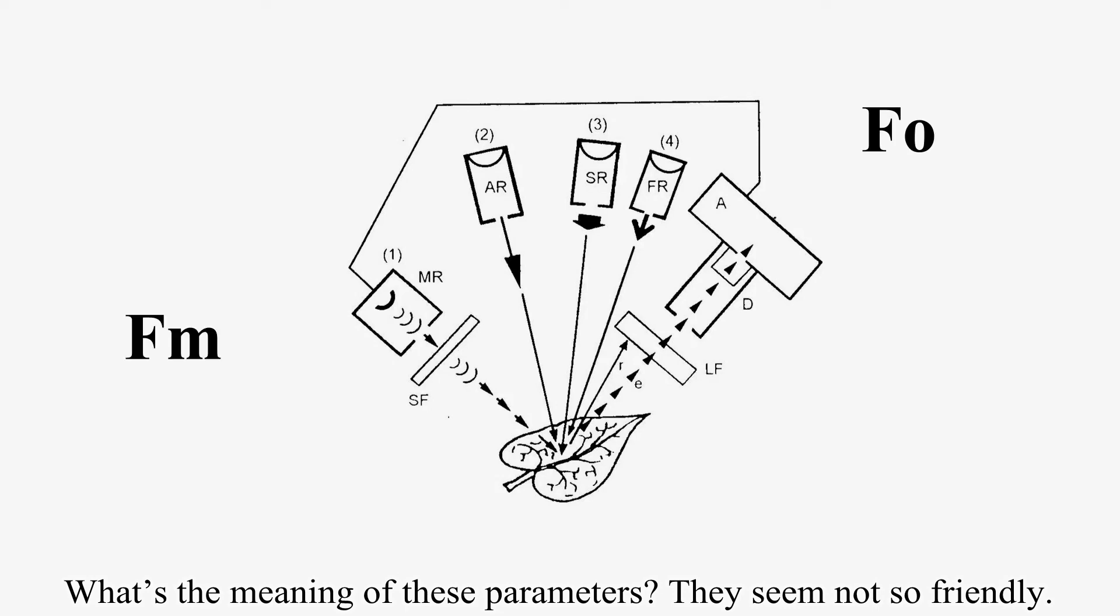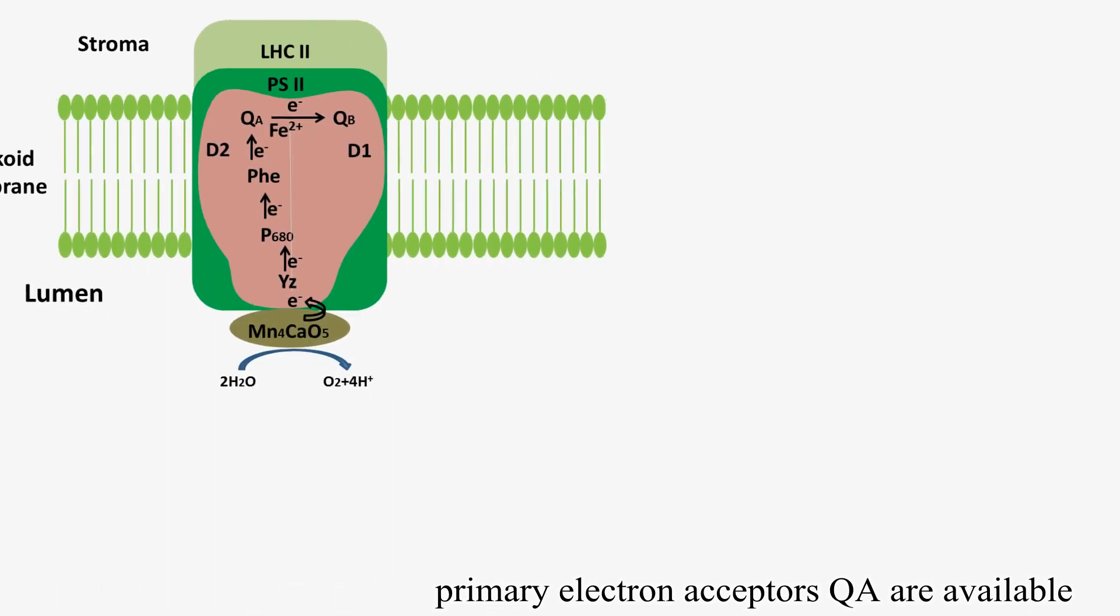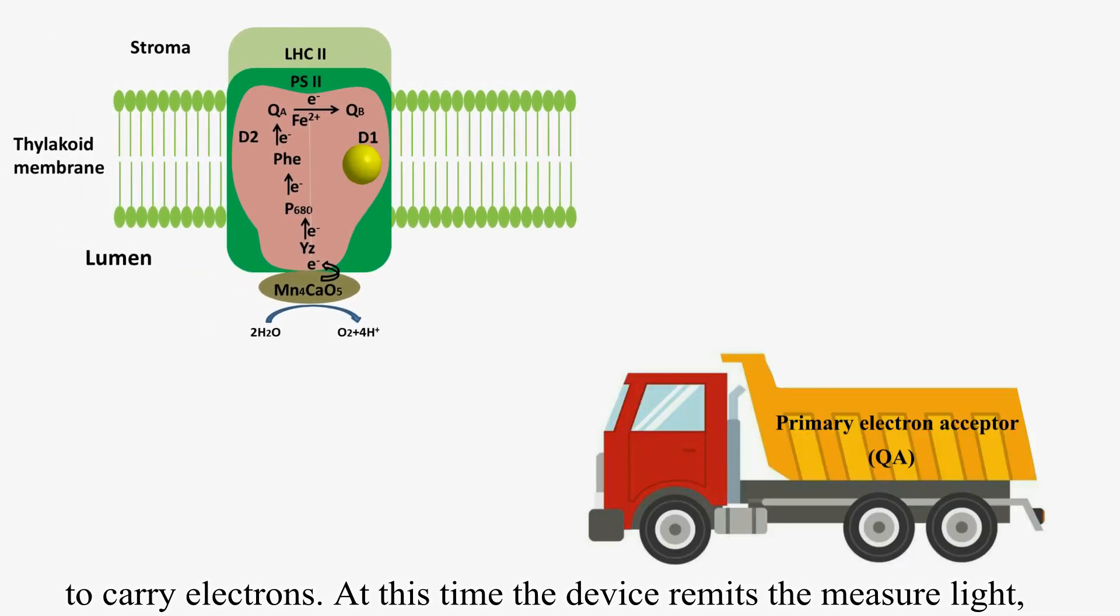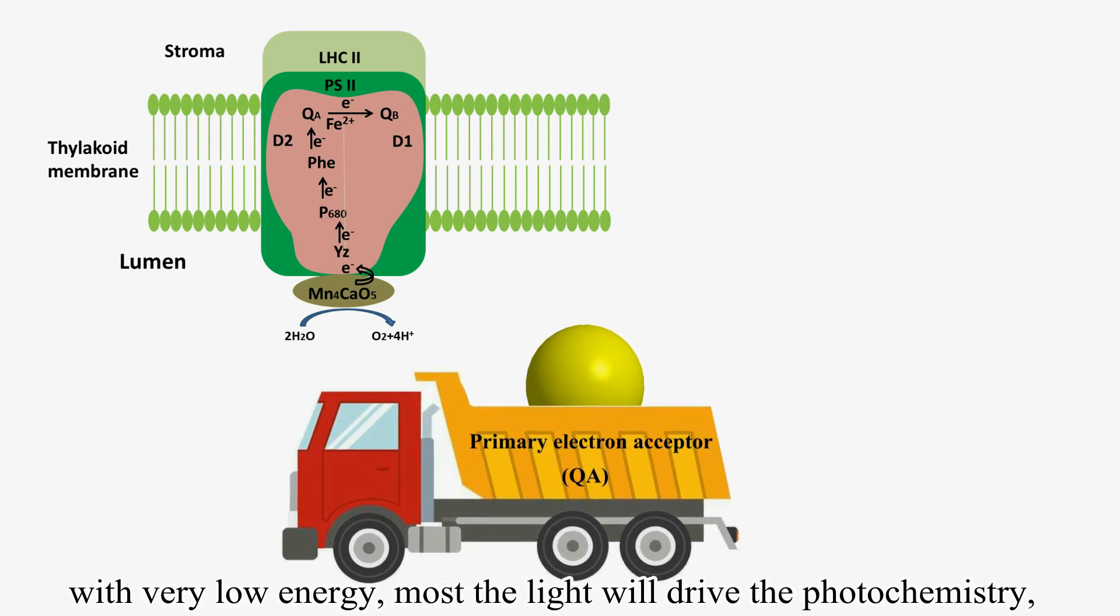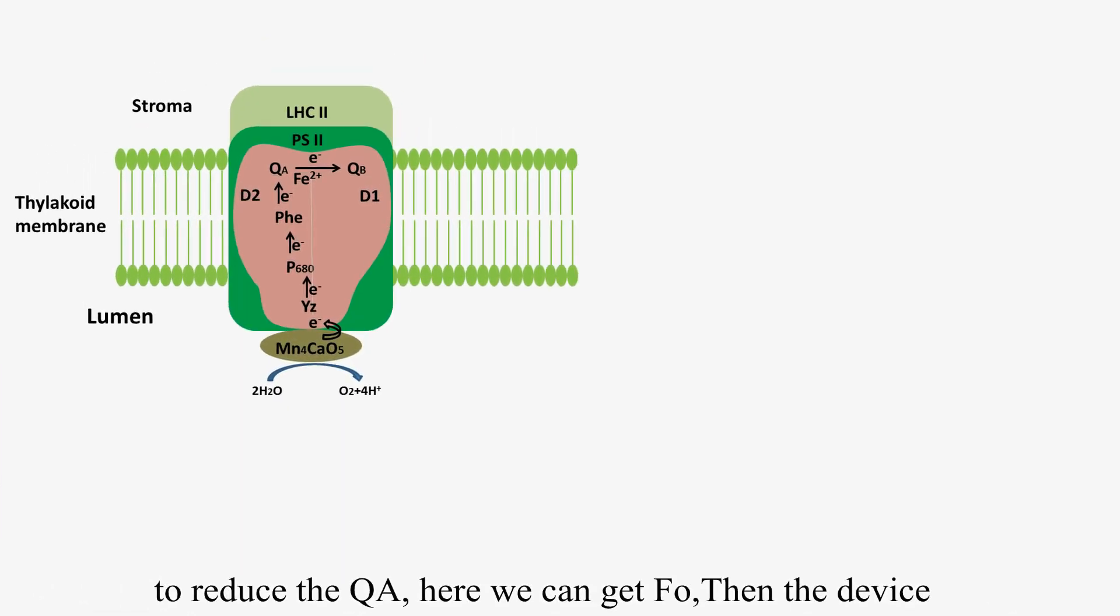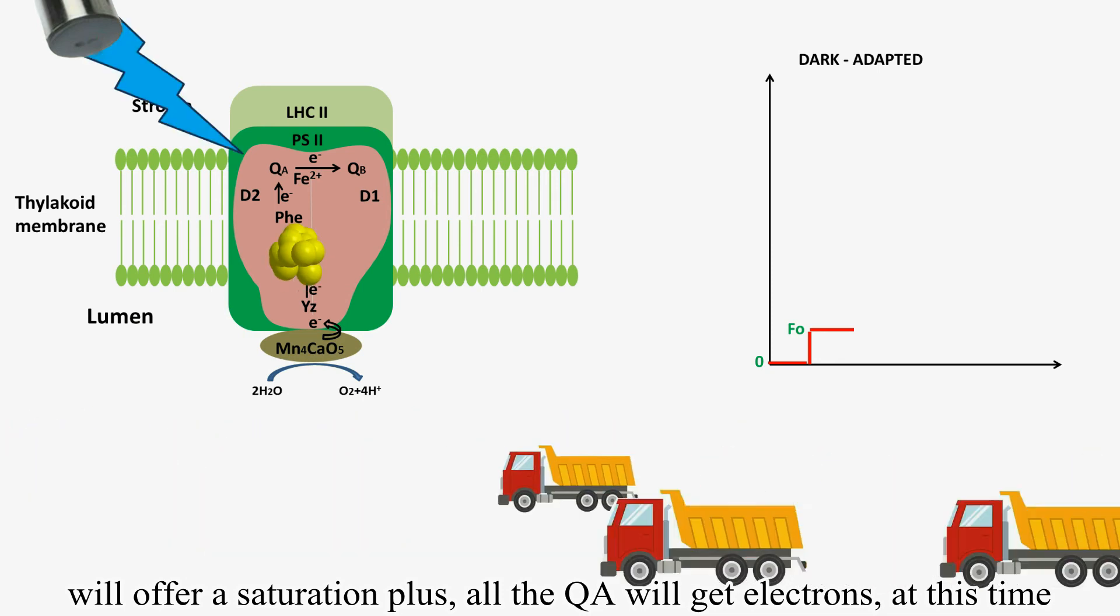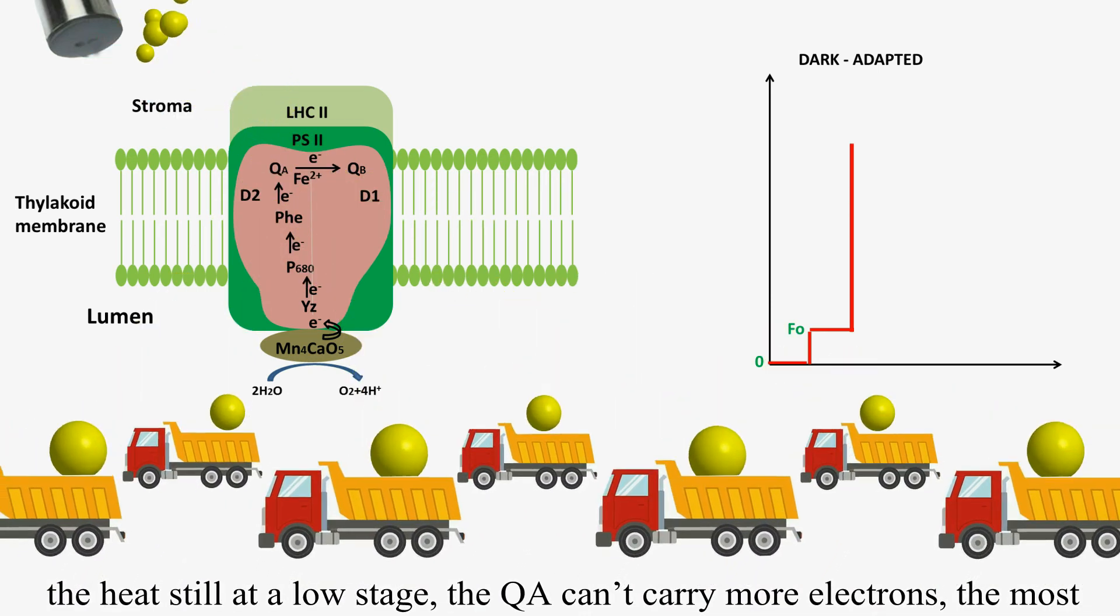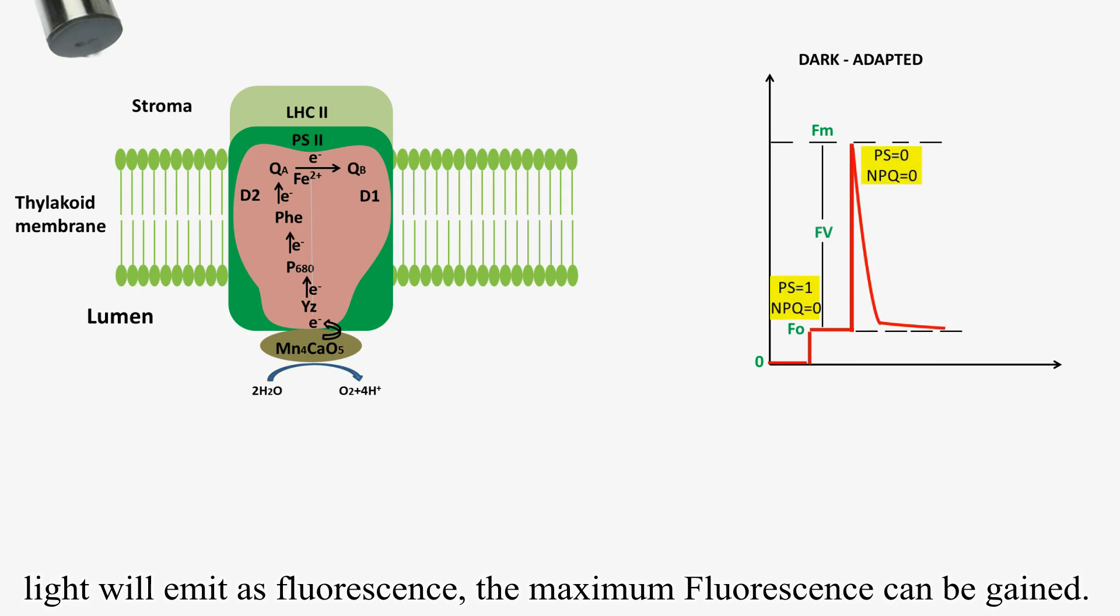What's the meaning of these parameters? They seem not so friendly. After dark adaptation, all the primary electron acceptors QA are available to carry electrons. At this time, the device emits the measuring light with very low energy. Most of the light will drive the photochemistry to reduce the QA. Here we can get F0. Then, the device will offer a saturation pulse. All the QA will get electrons. At this time, the heat is still at a low stage. The QA can't carry more electrons. Most light will emit as fluorescence. The maximum fluorescence can be gained.